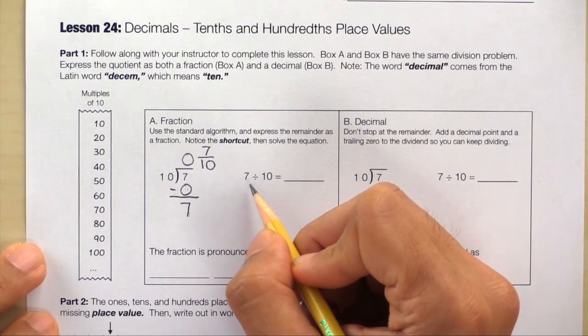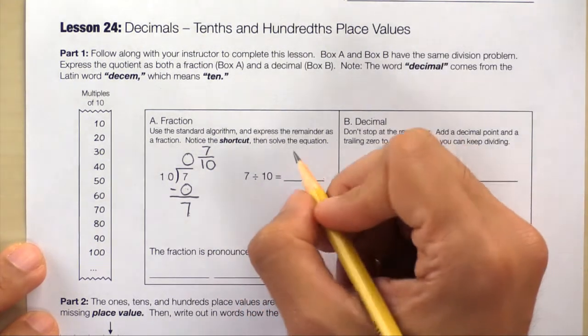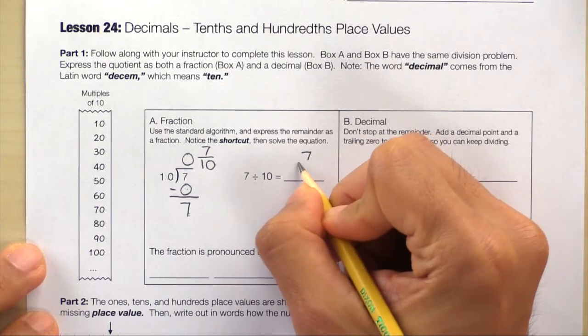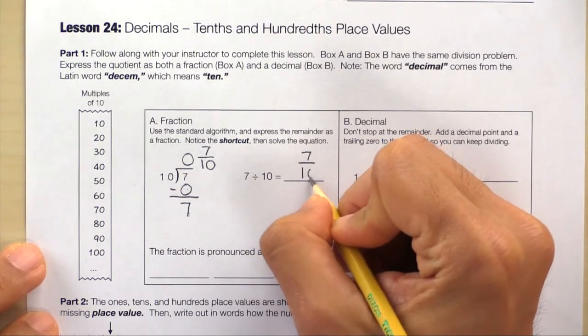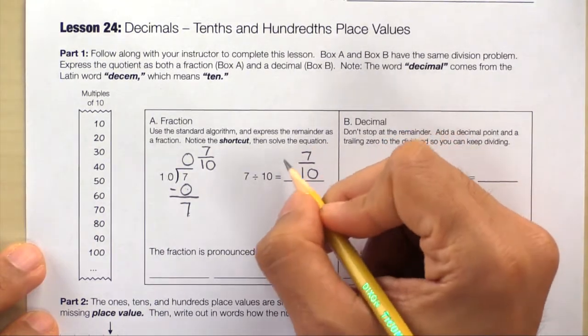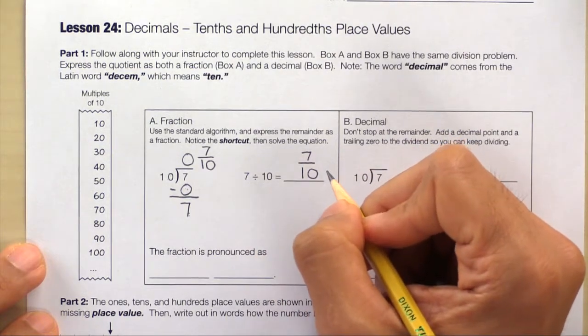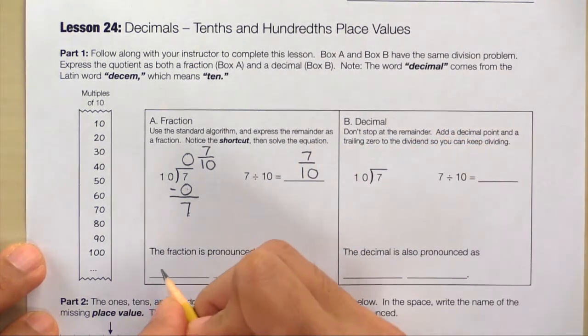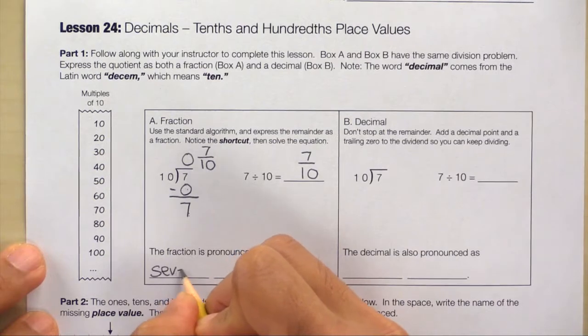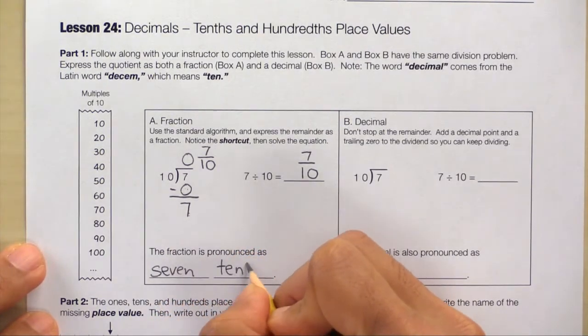Now let's solve the problem horizontally. Here's 7 divided by 10. So just write down 7 divided by 10. And this fraction is pronounced 7 tenths. So write down 7 tenths. And be sure to spell it out.